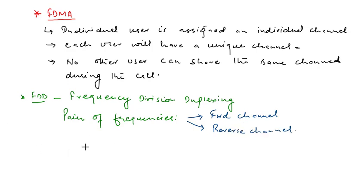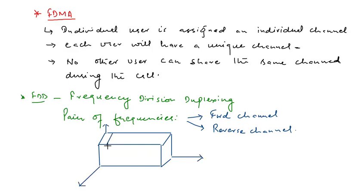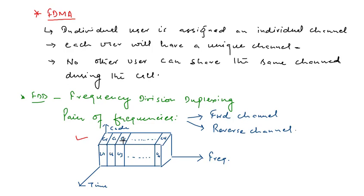This diagram represents your Frequency Division Multiple Access scheme. The complete box is your total available bandwidth, divided into different channels: C1, C2, C3, up to Cn, serving users U1, U2, U3, up to UN. Each user is assigned a unique channel for communication. If a user is not communicating at any time, that channel remains idle and no other user can use it.